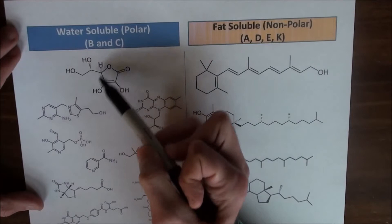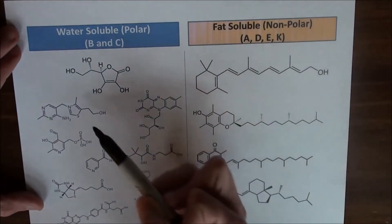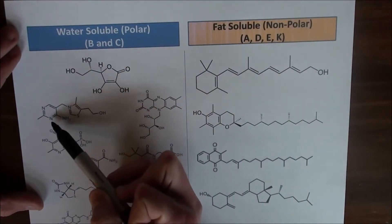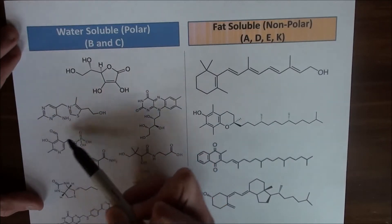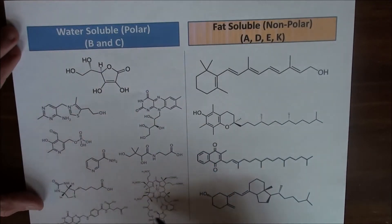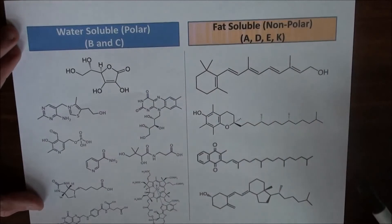You got this OH bond all throughout here. You have an OH bond here. This nitrogen-hydrogen bond is a highly polar bond. And you can see that same structure repeated all throughout the different B and C vitamins.